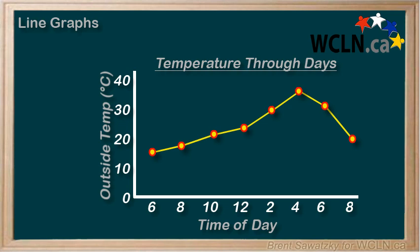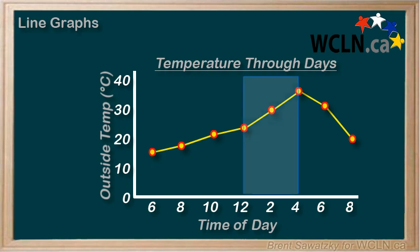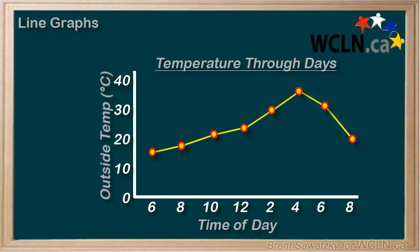Our graph is a nice way to see how the temperature changes throughout the day. It moves up gradually until about noon, and then the sun starts to heat things up a bit more quickly between noon and 4 p.m. Then the temperature starts to drop as the sun becomes less direct — a good overall picture of this situation.